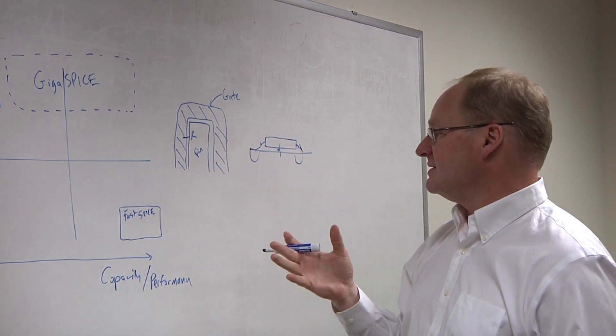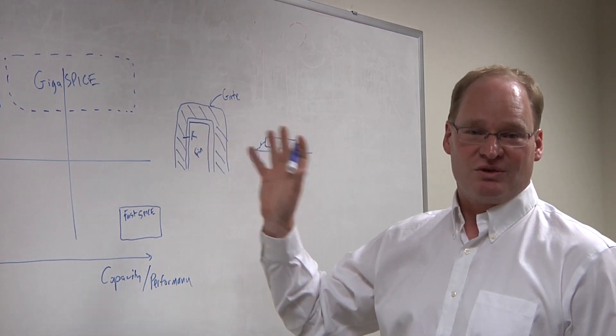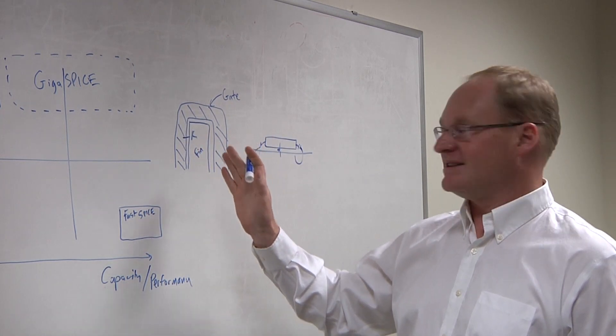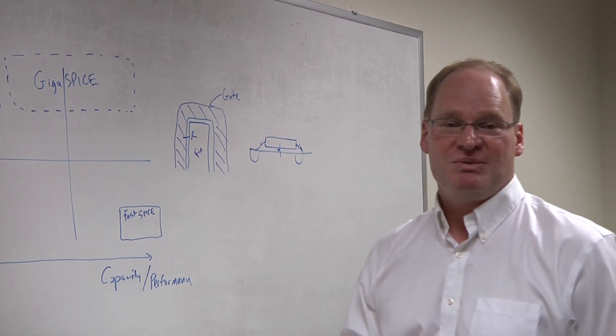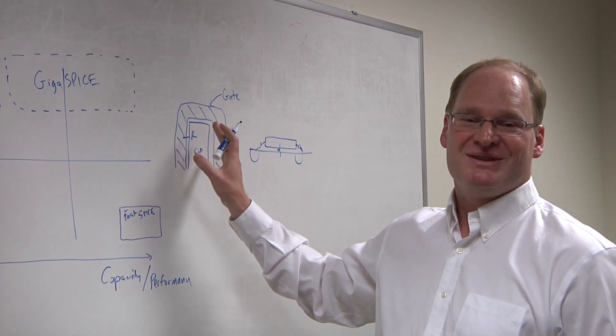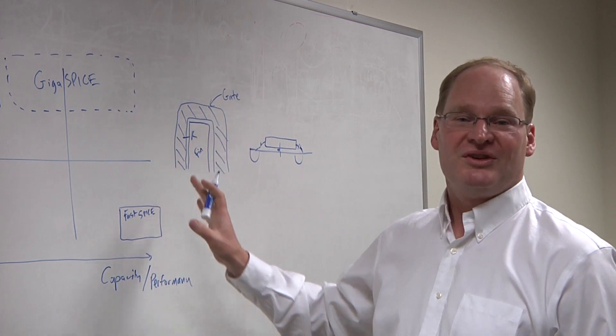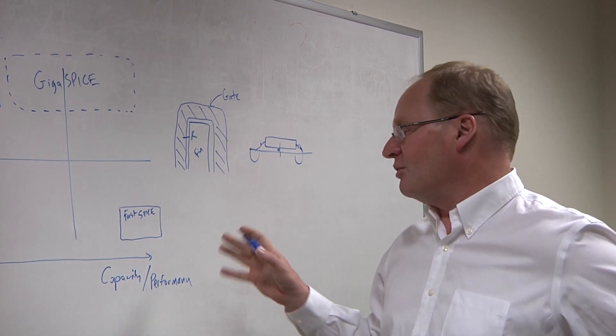And one of the tricks that FastSpice has always tried to do is to decouple the gate from the channel, source, and drain and use that as kind of a cut point for the matrix to get a better speed. But because of the strong coupling, you can't really choose those as cut points in the matrix. You have to solve the whole system simultaneously.